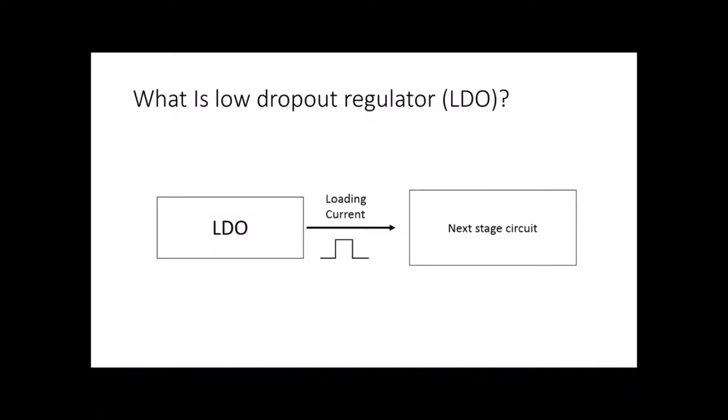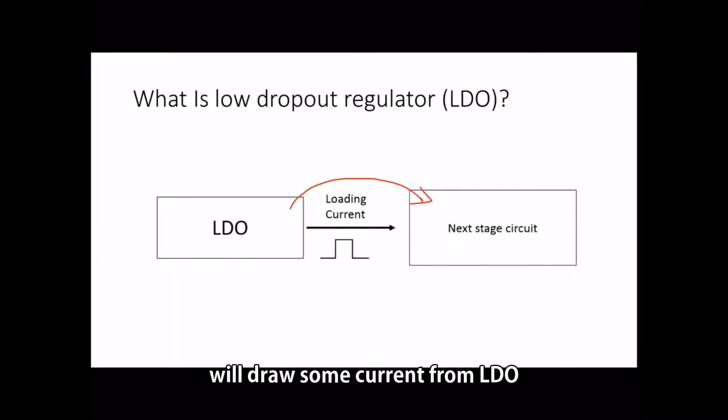For example, sometimes the next stage circuit may draw some current from LDO. For example, maybe 100mA, or suddenly it will drop to 0mA.